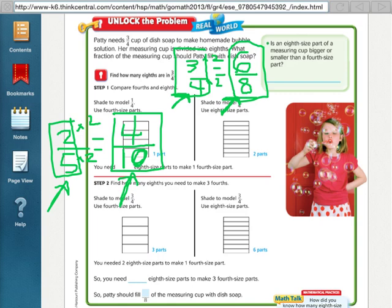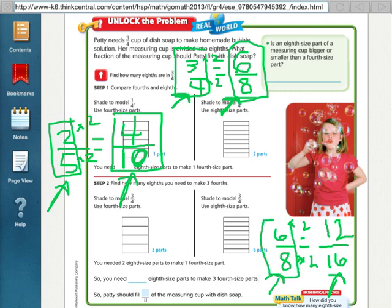I'm going to do another one for you. Say they gave us 6/8 and they wanted us to change it into sixteenths. Well, I know that I multiply 8 times 2 to get 16. So since I already did that to the bottom, I'm going to have to do it to the top to finish my fraction. 6 times 2 is 12. So 6/8 is equal to 12/16.